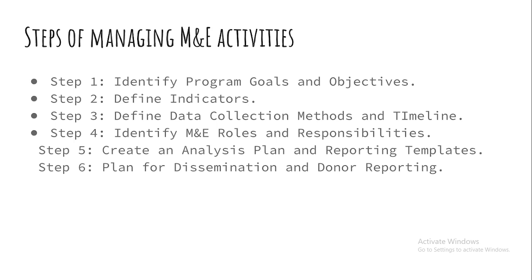Step number one: identify your program goals and objectives. As an M&E personnel, you have the project or program document that contains its goals and objectives. From there you identify outcomes with their indicators, activities that feed into achieving the stated objectives, and the outcome or output indicators you'll be monitoring and evaluating.